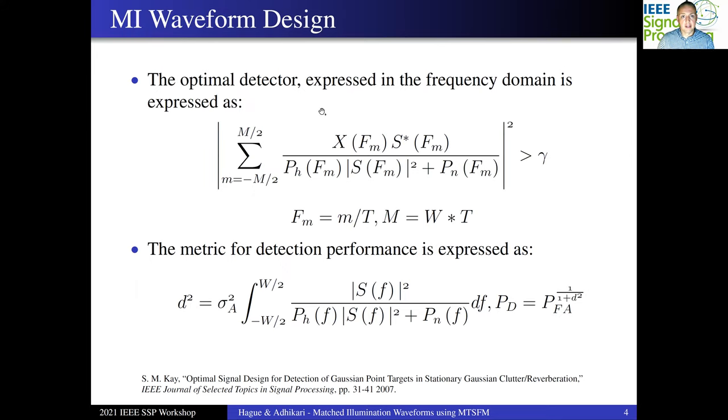The optimal detector, something that Kay derived in this paper, is expressed in the frequency domain. S(f) is the waveform spectrum, and fm is just discrete points in frequencies. Capital M represents the waveform's time bandwidth product, the bandwidth w times the pulse length t. The metric for detection performance is expressed as d squared, and this d squared metric actually completely characterizes the receiver's probability of detection and probability of false alarm. We're going to use this detection metric as our main metric of design performance in evaluating these waveform designs.